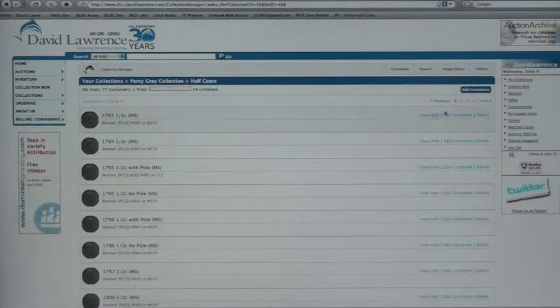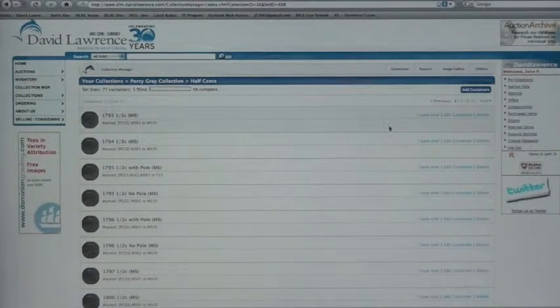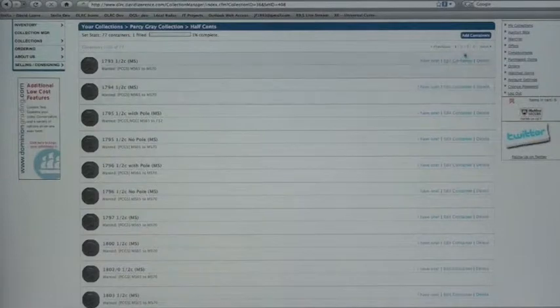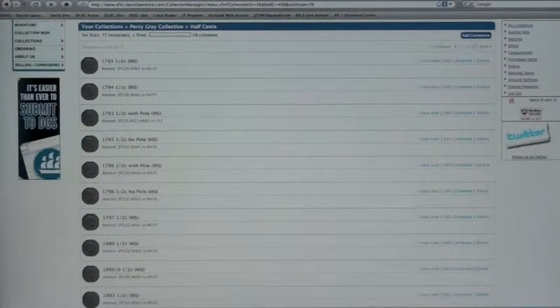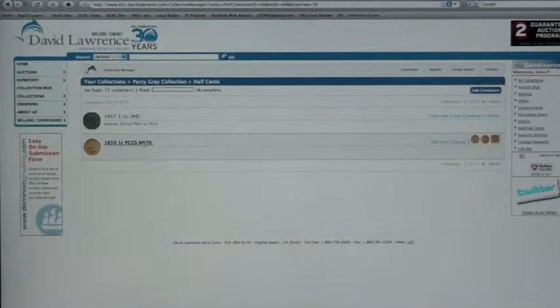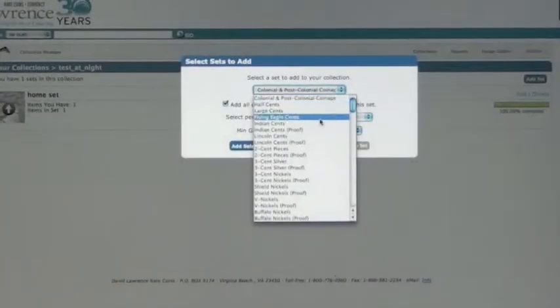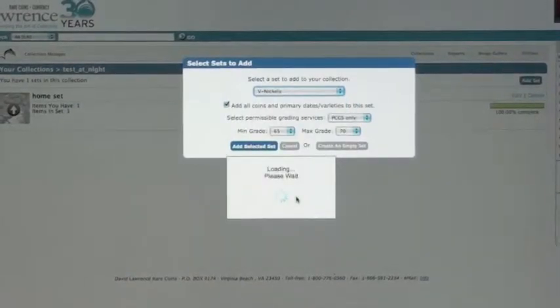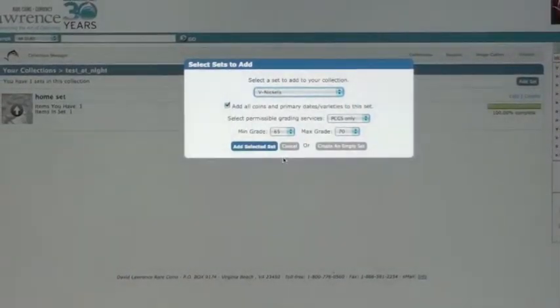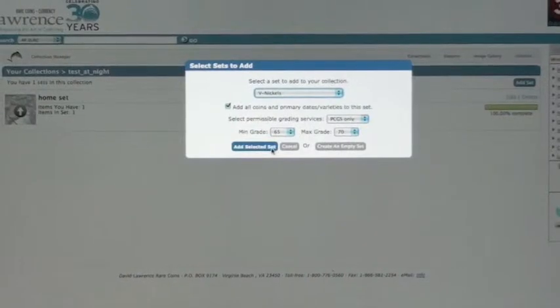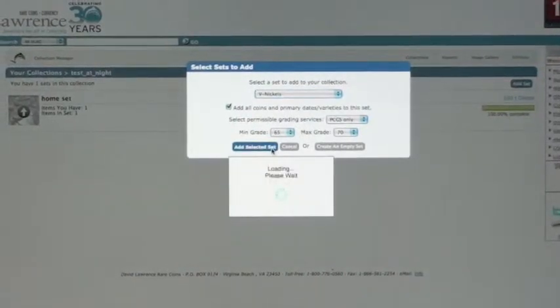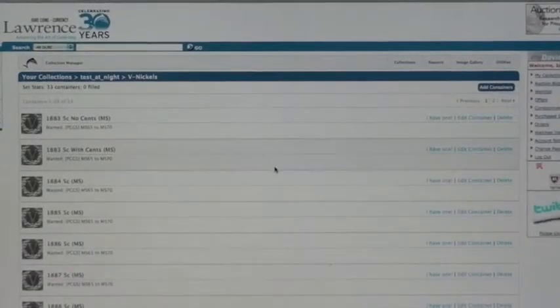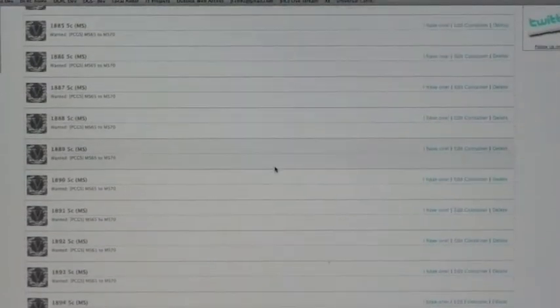Once you get past the set level, you need to add containers into the sets. The containers are essentially want-listed items. Going to a Nickel set example, if you have a set of Nickels, you can automatically have the software create a template of all the different items in the Nickel set. You can define the grading services and the grade ranges you're interested in, and the software will automatically build out a framework of the Nickel set. These are all called containers.